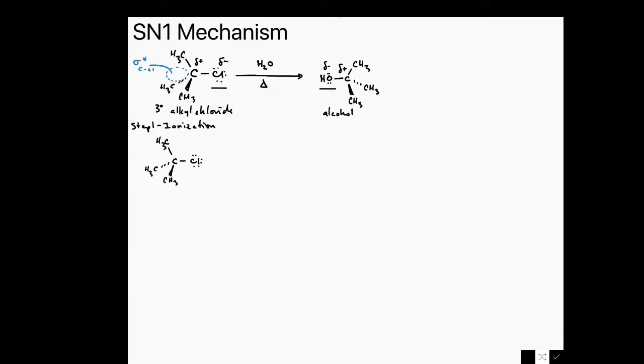And by putting in the lone pairs from the Lewis dot structure, we can then assign delta minus to the chlorine and delta plus to the carbon. Ionization is the formation of ions, and as such, the bond bearing the leaving group is going to be heterolytically cleaved. So what does that mean? The electrons in this bond are going to go onto chlorine. So this is ionization.